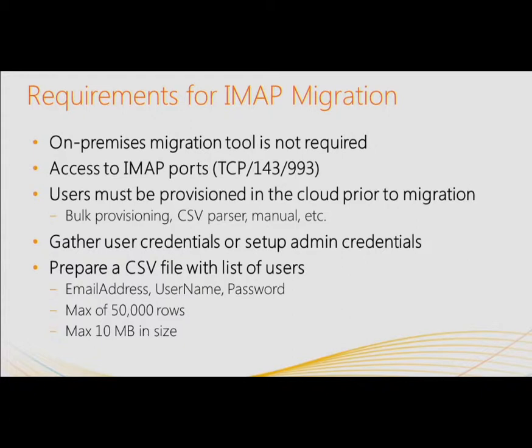Going from POP and IMAP or third-party providers to Office 365, all you need is your IMAP ports open over TCP. It's really good to have your port numbers at your fingertips for discussions with customers. You also need a CSV file with a list of all the POP3 users you want to migrate, and have that ready.